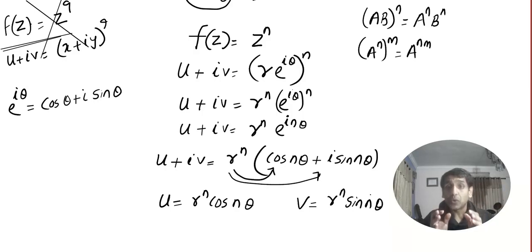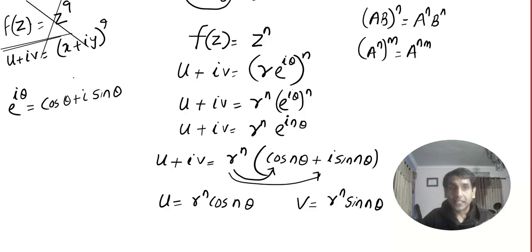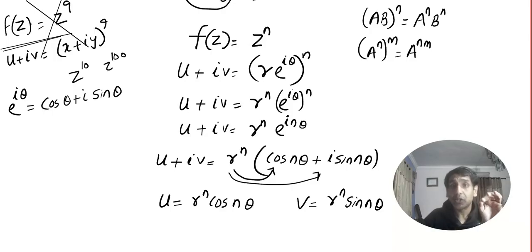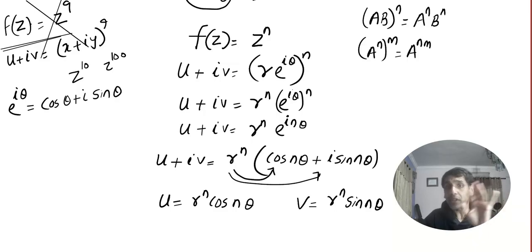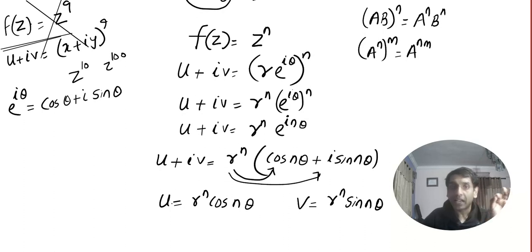So we get u = r^n cos nθ and v = r^n sin nθ. In general for z^n, I did not apply the Cartesian method — I converted it into polar form and found u and v.